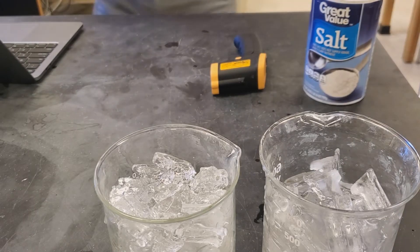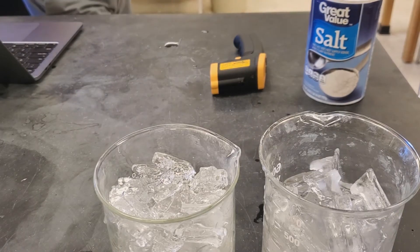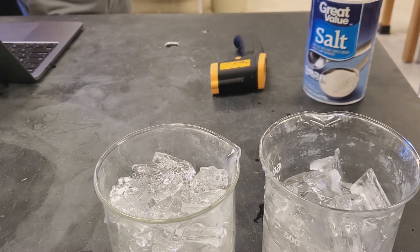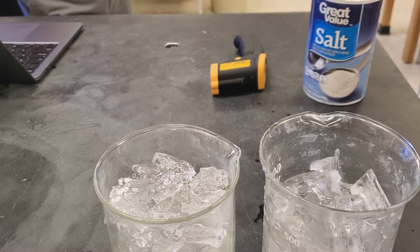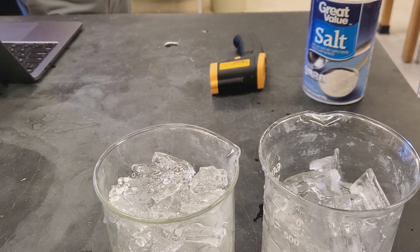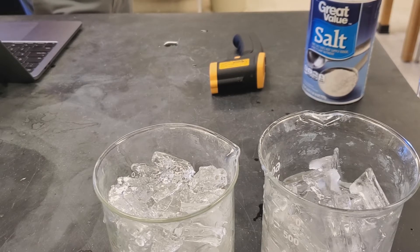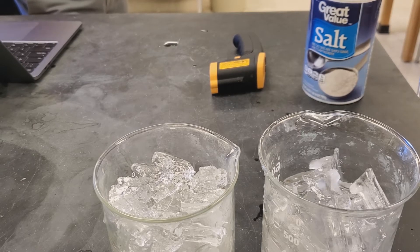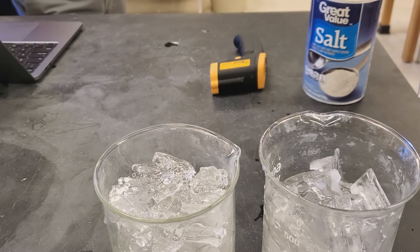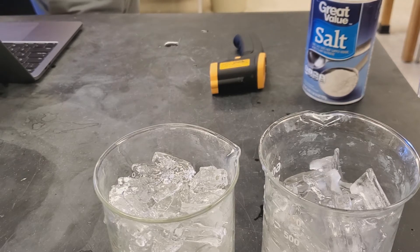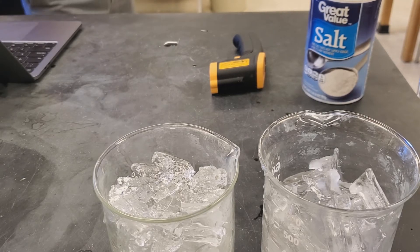Okay, so this is what I'll call the salted ice lab, but don't title your lab the salted ice lab because that would be very lame and lose you a lot of points. You want it to be a detailed title that has both the independent and dependent variable in it.